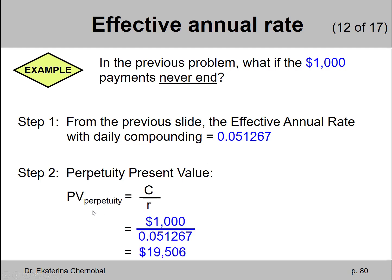The perpetuity present value formula says take the perpetuity payment and divide it by the interest rate or discount rate. The perpetuity payment is $1,000. The correct discount rate is the effective rate from the first step 5.1267%.